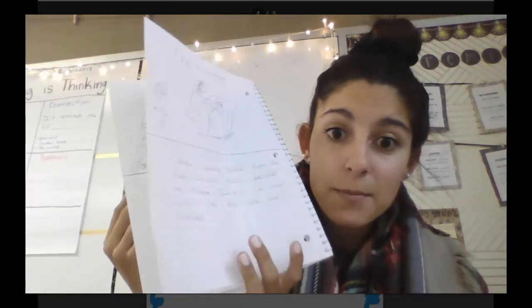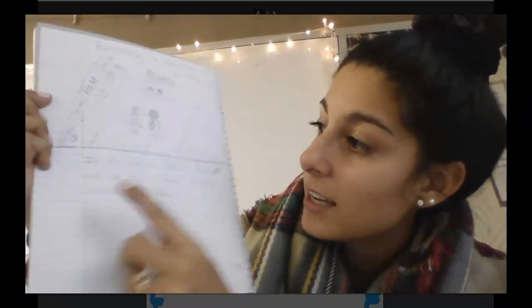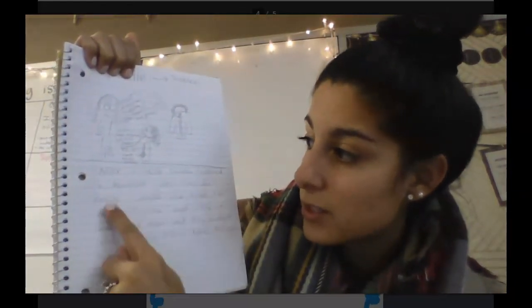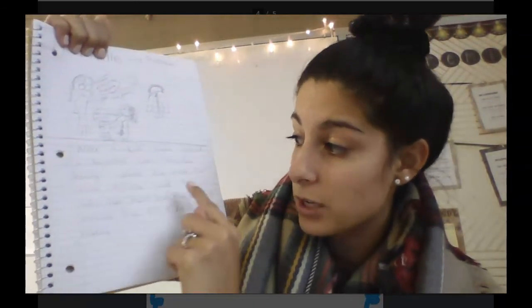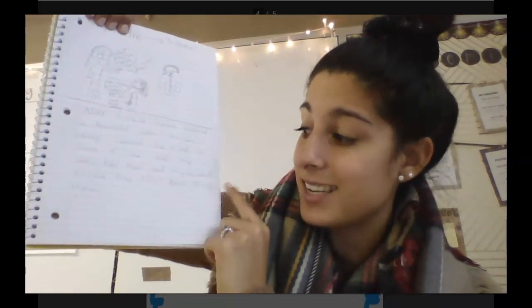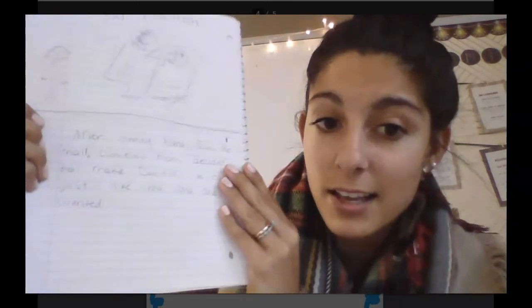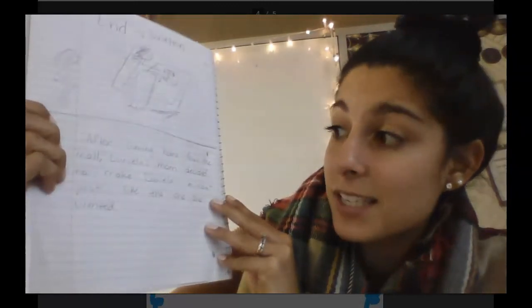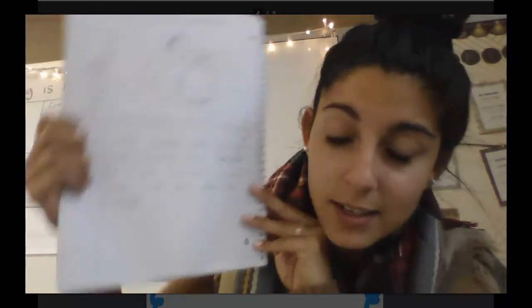Now you should have three different pieces of paper — a beginning, a middle, and an end. The beginning introduces your character and setting: 'It all started when Daniela and her mom were walking around the mall.' The middle has the problem: 'After a while, Daniela noticed a beautiful coat... sadly her mom said they couldn't because they didn't have enough money.' The end has the solution: 'After coming home from the mall, Daniela's mom decided to make Daniela a coat just like the one she wanted.'